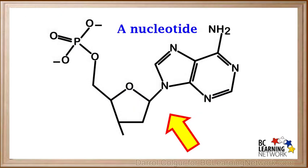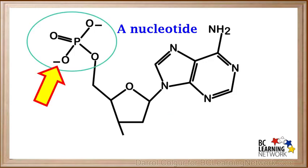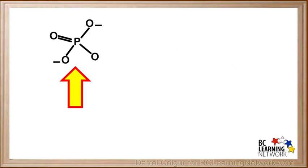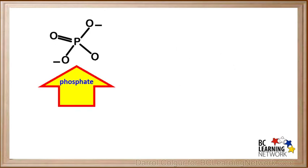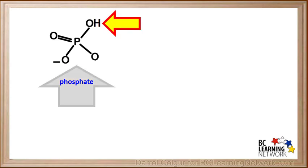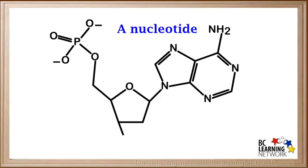This shows the chemical structure of one nucleotide of the polynucleotide DNA. Now we'll concentrate on one part on the left side of this molecule. This is called the phosphate group. It consists of a phosphorus atom surrounded by oxygen atoms. Hydrogen atoms can bond to the oxygen atoms with a negative charge, and sometimes an OH is shown here rather than an O negative.